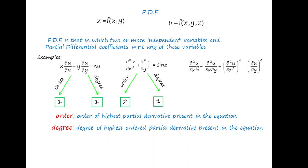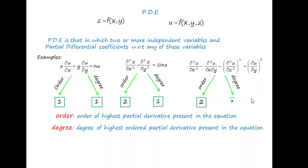In the third example, u is differentiated with respect to x twice in the first term. In the second term, u is differentiated with respect to x and y, giving power 2. u is also differentiated partially with respect to z twice, and the last term has u differentiated partially with respect to y once. The maximum order is 2, so the order of this equation is 2. When coming to degree, we consider the highest power of the highest ordered term. The second-order term has power 3, so the degree of this equation is 3.